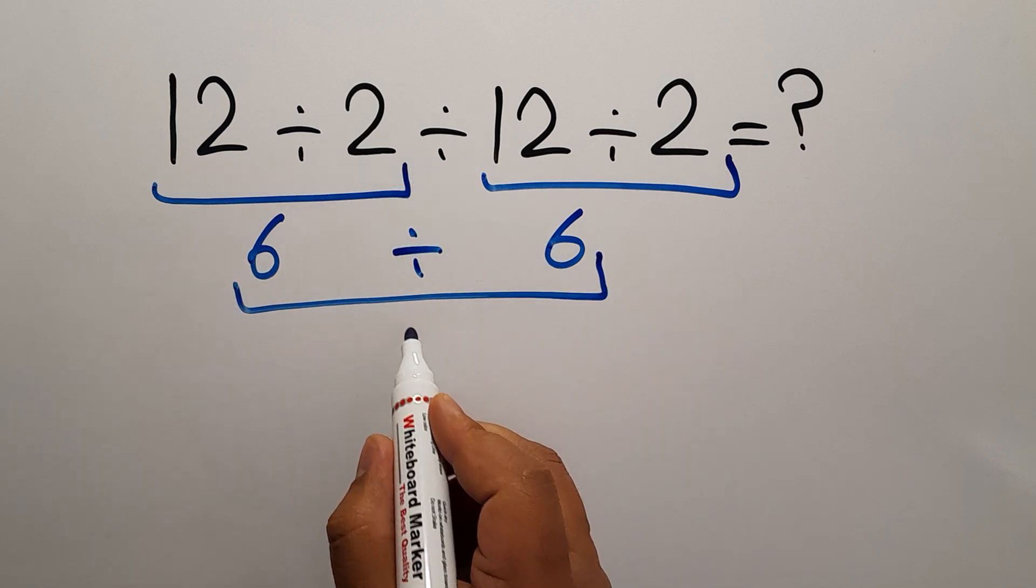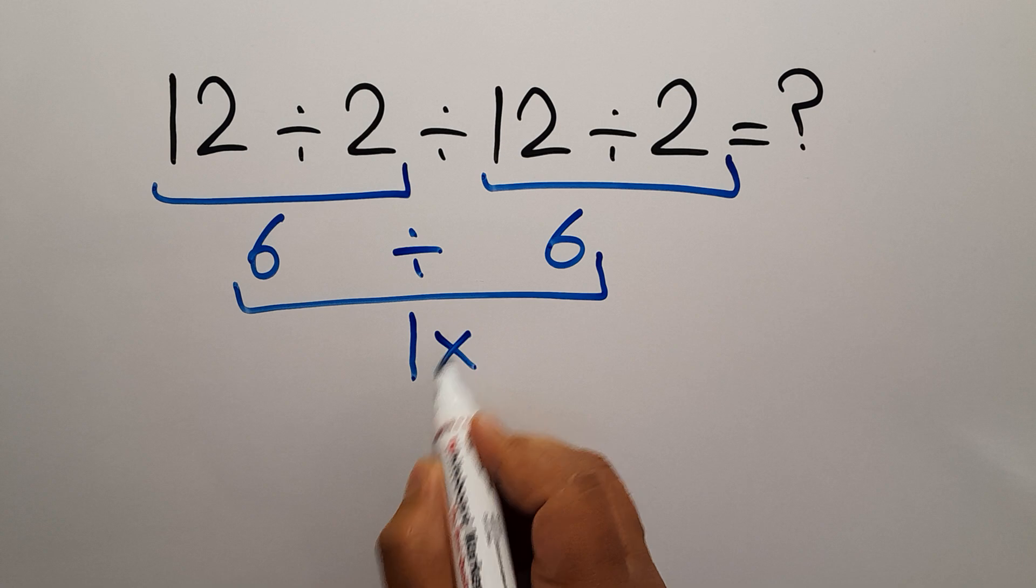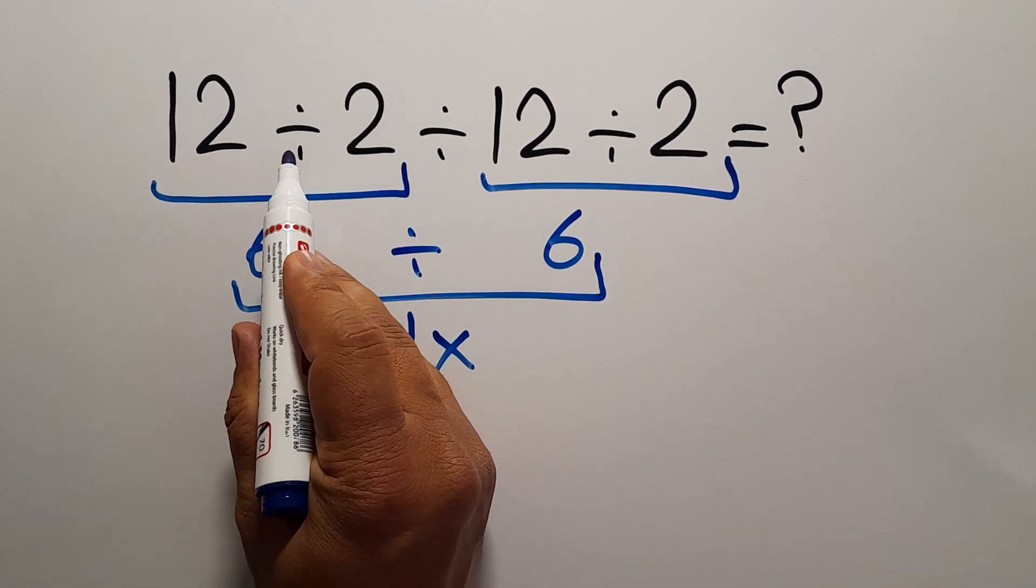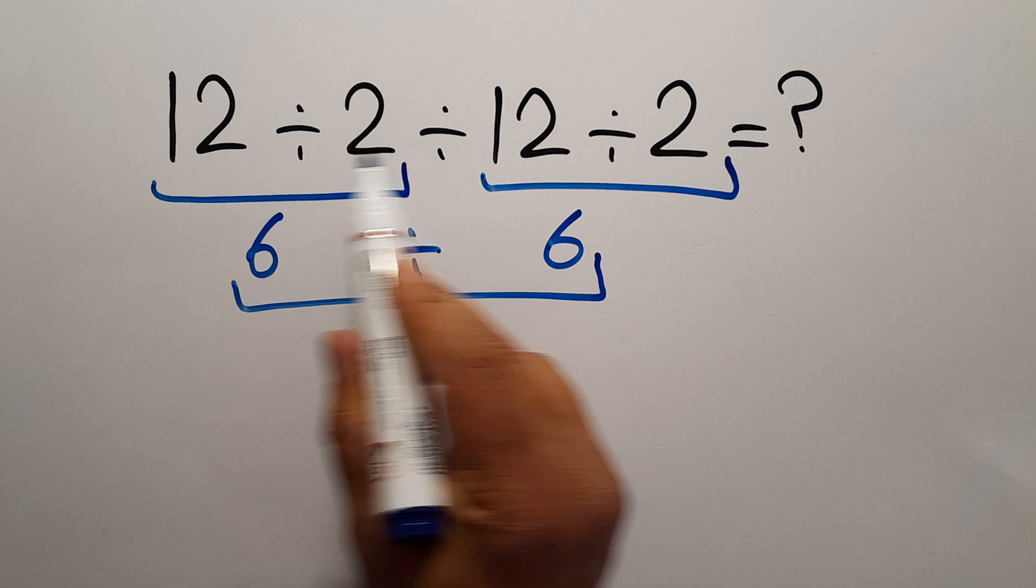gives us just 1. But this answer is not correct because when we have more than one division in an expression...